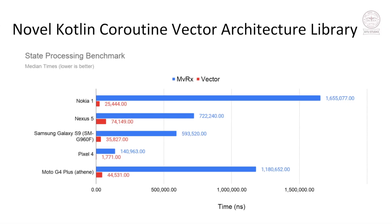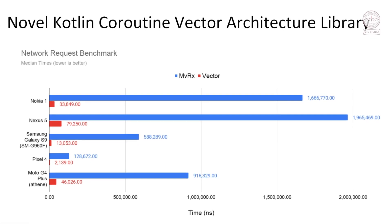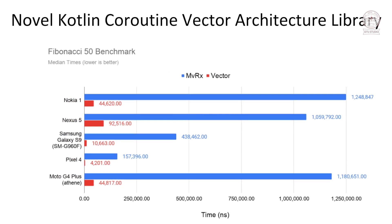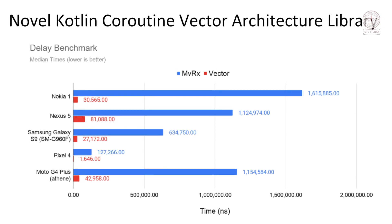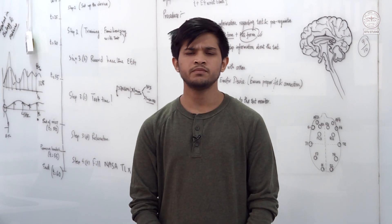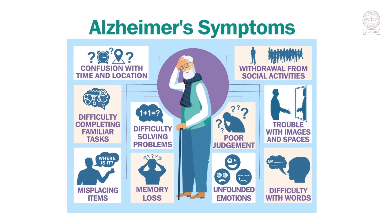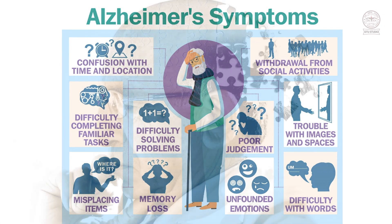Kotlin Coroutines are a new concurrency framework for Android. Their lightweight structured concurrency model makes them a supreme fit for the resource-constrained environment that Android offers. In this project, we aim to formally compare their performance against existing concurrency frameworks such as JVM executors and RxJava. Additionally, we compare the performance of two novel model-view-intent architecture libraries for Android: Mavericks by Airbnb and Vector proposed here at DTU. Comparison of their performance offers a key insight into the possible performance gains in real-world projects by a switch to Kotlin Coroutines.